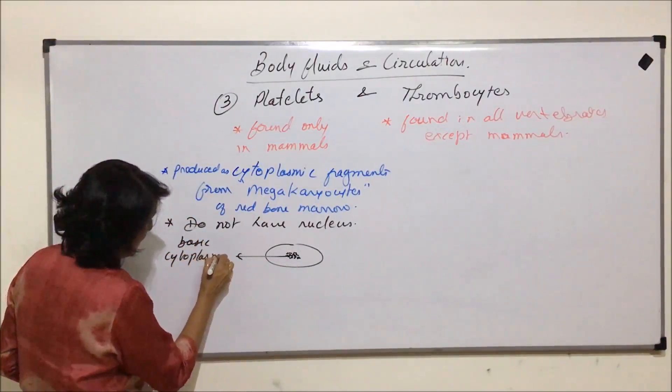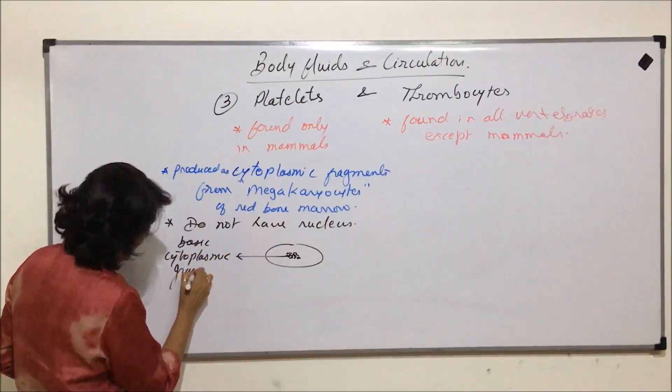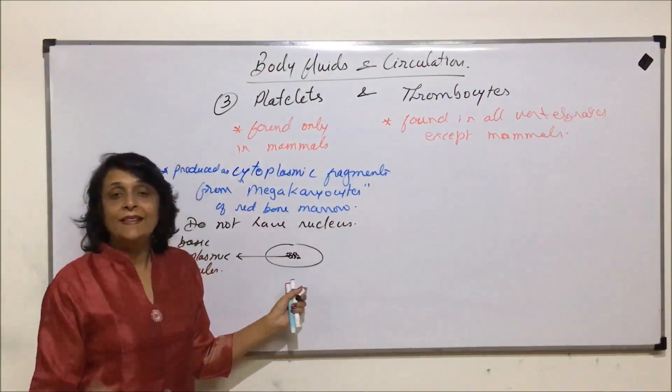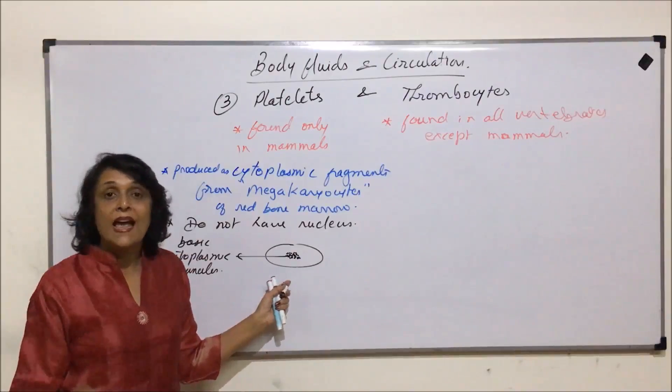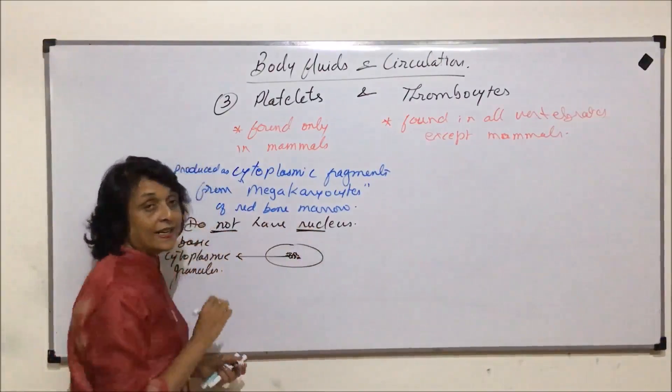These are basic cytoplasmic granules which are located in the center and are compact, and that is why it gives an impression as if it is nucleated. But there is no nucleus in it.